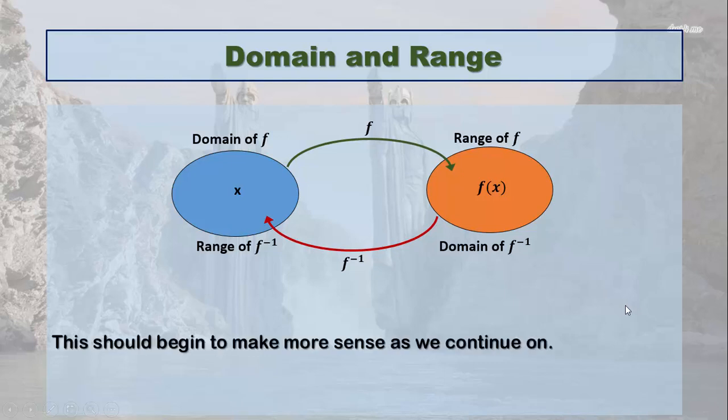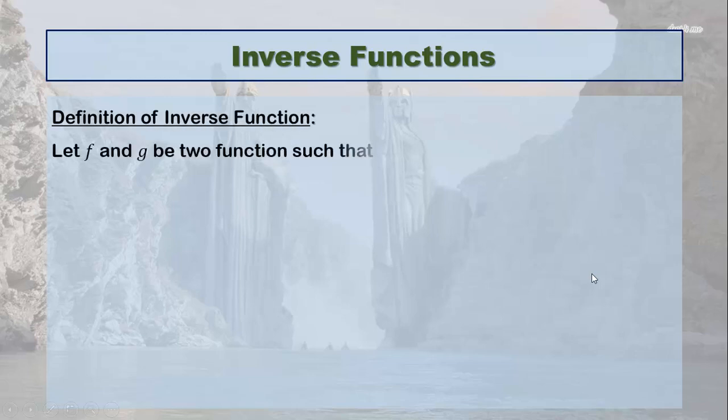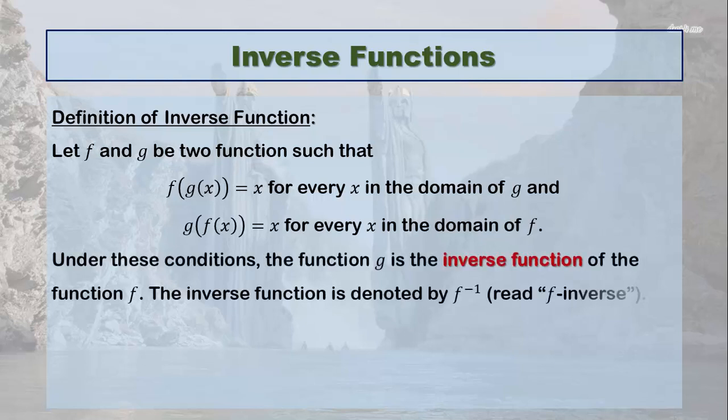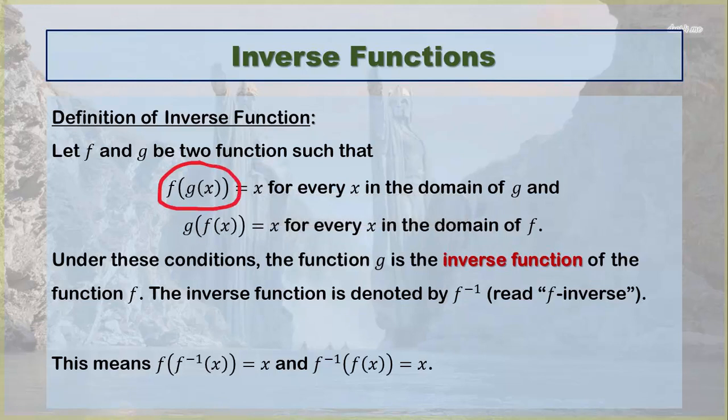Hopefully this is making sense. Let's go to what the definition of an inverse function is. Let f and g be two functions such that f(g(x)) = x. You should remember this is a composite function. We just did that in the last section. f(g(x)) = x for every x in the domain of g. And the opposite is true: g(f(x)) = x for every x in the domain of f. Under these conditions, the function g is the inverse function of the function f.